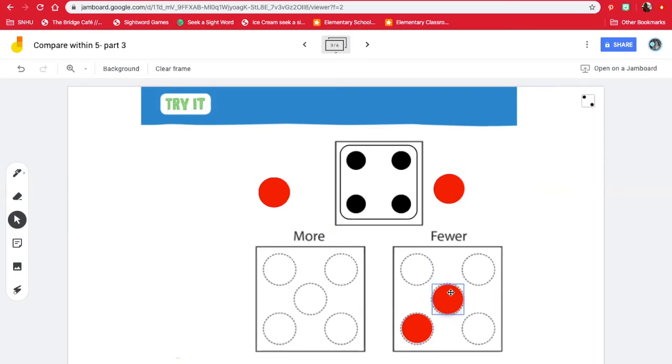Because I know that three is one less than four. Now what's more than four, four, five. Five is one more than four. So here we have five.